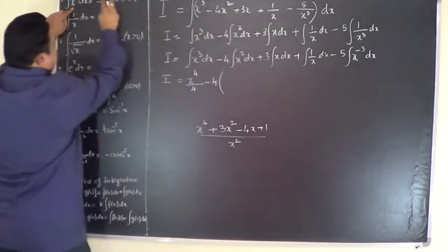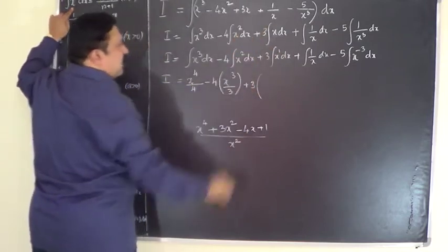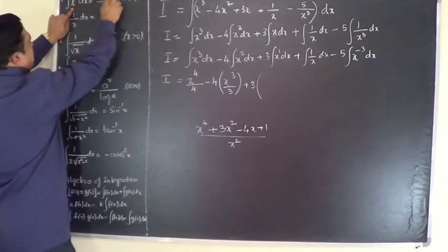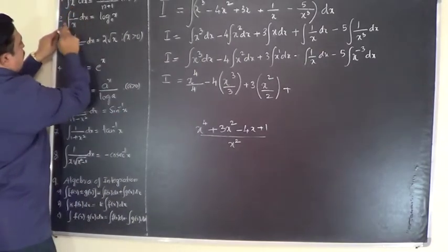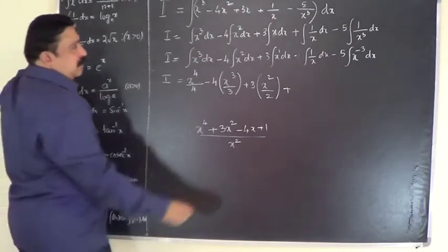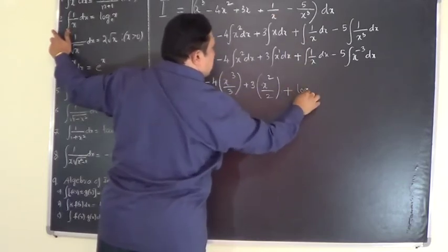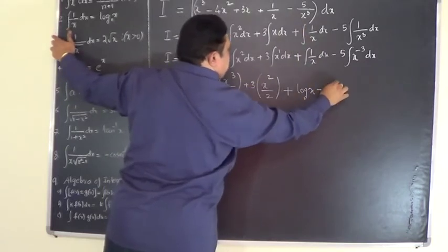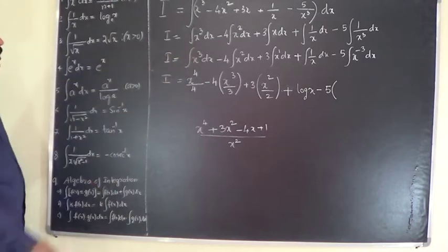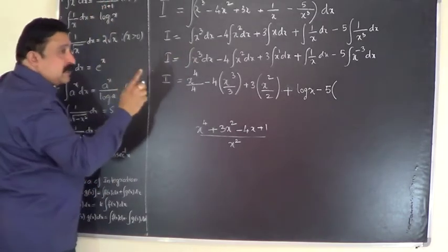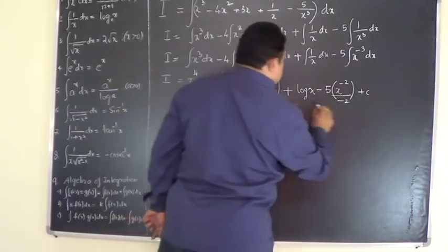Minus 4 times integral x squared dx — here n is 2, so 2 plus 1 is 3, giving x cubed by 3. Plus 3 times integral x dx — x has power 1, so n is 1, and 1 plus 1 is 2, giving x squared by 2. For integral 1 by x dx, there is a direct formula: it equals log x. So plus log x. The sign is minus here, so minus 5 times integral x to the power of minus 3 dx — n is minus 3, so n plus 1 is minus 2, giving x to the power of minus 2 divided by minus 2 plus c. This is the answer.